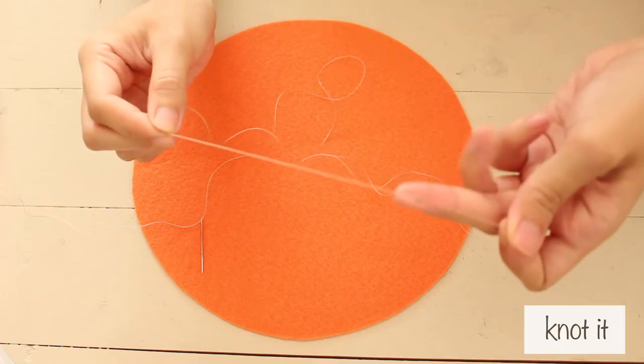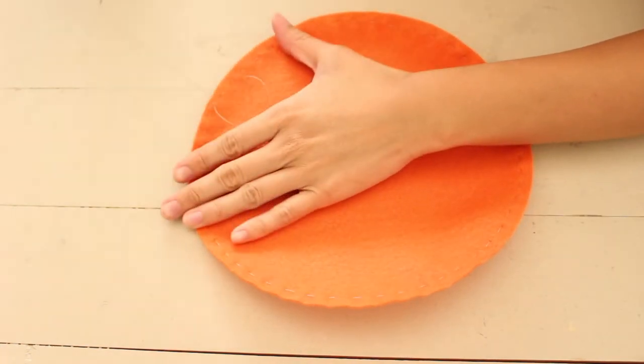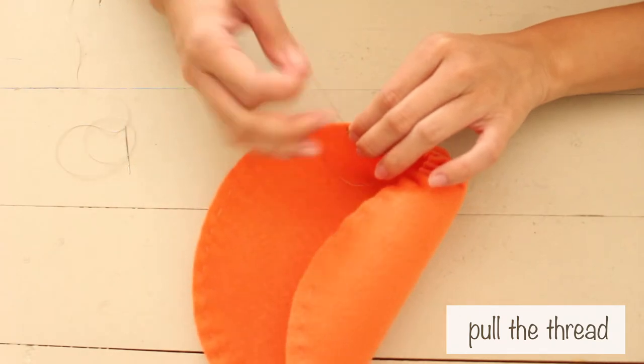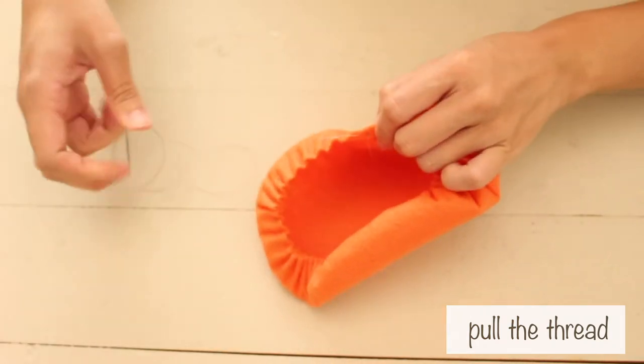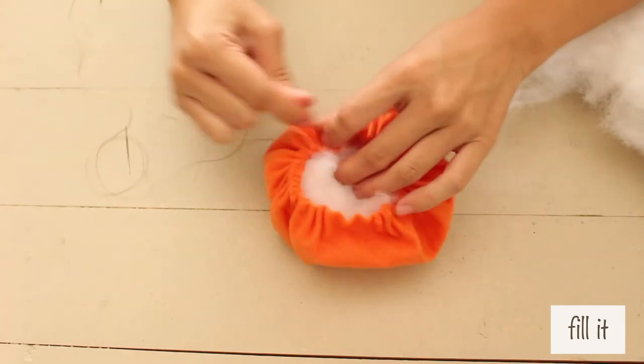Tie a knot at the end of your thread and stitch along the edge of the circle. Pull the thread so that the felt scrunches together. Fill it with poly fiberfill before closing it.